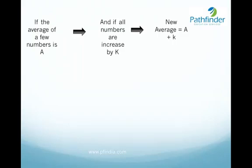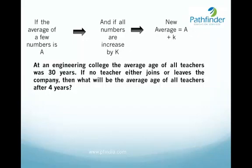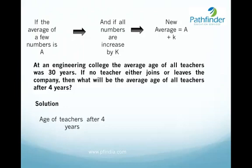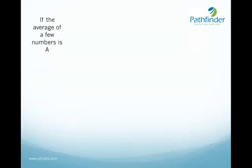At an engineering college the average age of all teachers was 30 years. If no teacher either joins or leaves the college, what will be the average age of all teachers after four years? Since every teacher is four years older, each number increases by four, and by the above property the average also increases by four. So the average age after four years is 30 plus 4, equal to 34 years.